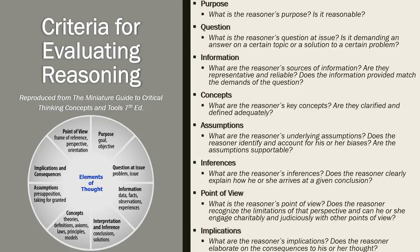Thought can be said to consist of at least eight elements — these are the fodder upon which critical thinking subsists. Critical thinking necessitates a careful evaluation of these elements in each instance of thought or communication. To evaluate a reasoner's purpose, including that of your own, pursue questions like: What is the reasoner's purpose? Is it reasonable? To evaluate the question: What is the reasoner's question at issue? Is it demanding an answer on a certain topic or a solution to a certain problem? To evaluate the information: What are the reasoner's sources of information? Are they representative and reliable? Does the information provided match the demands of the question?